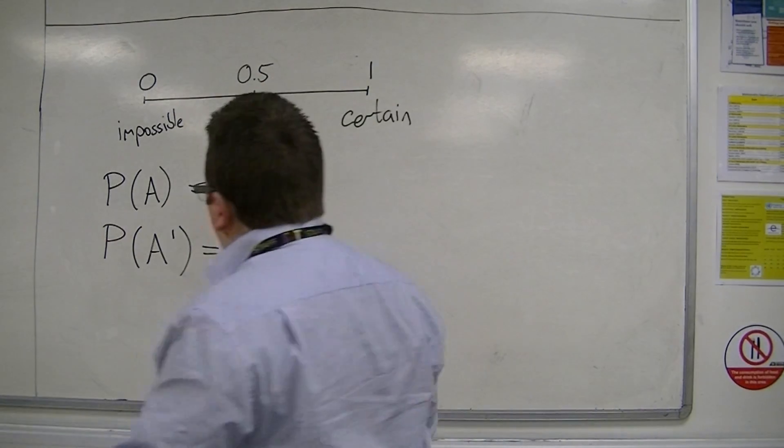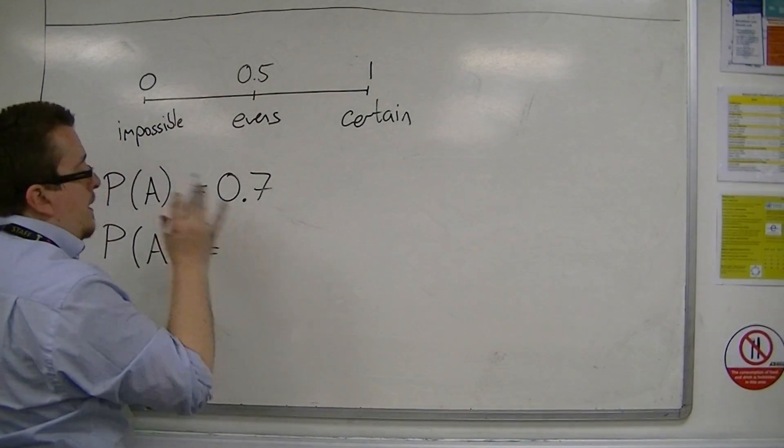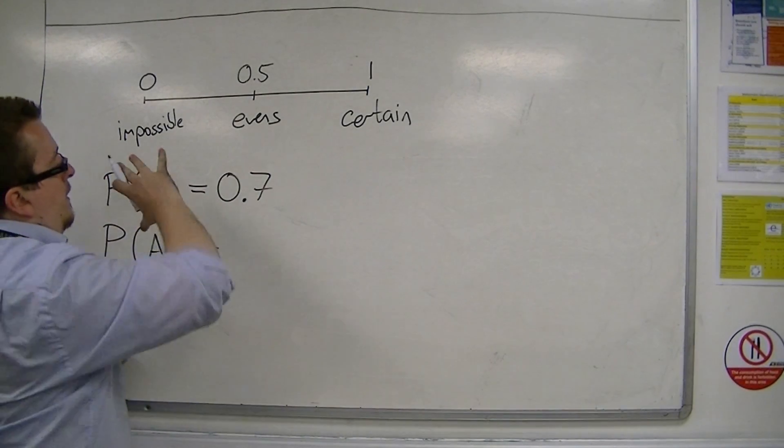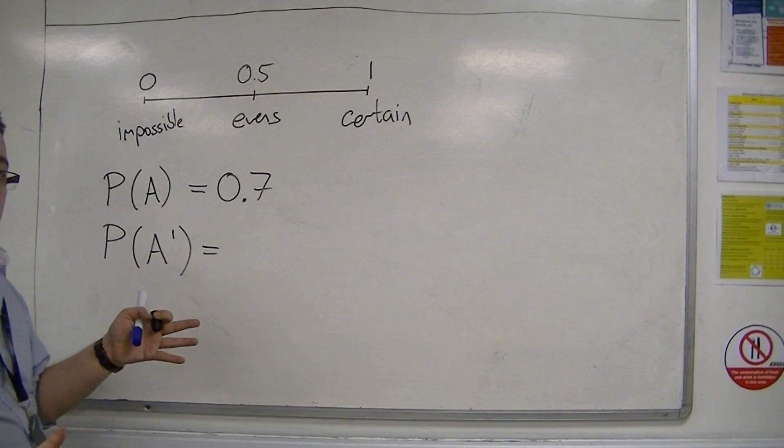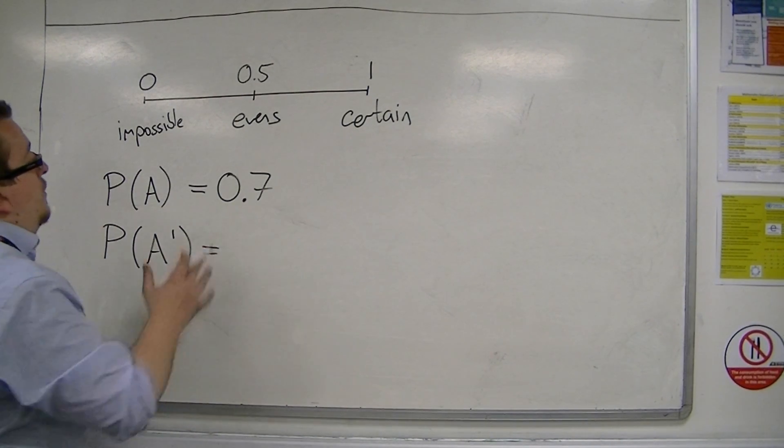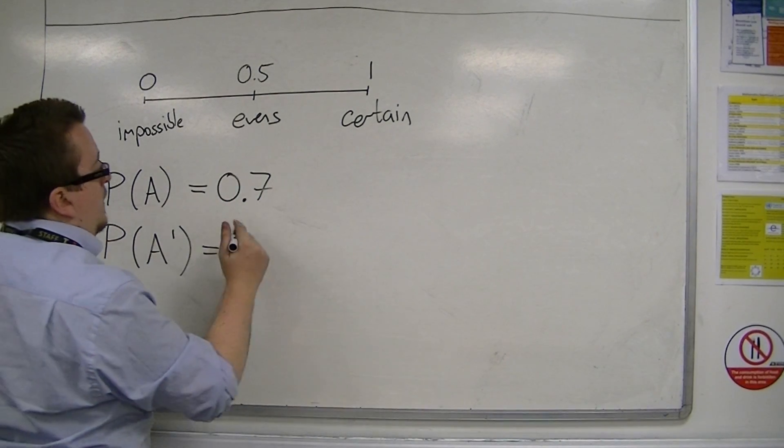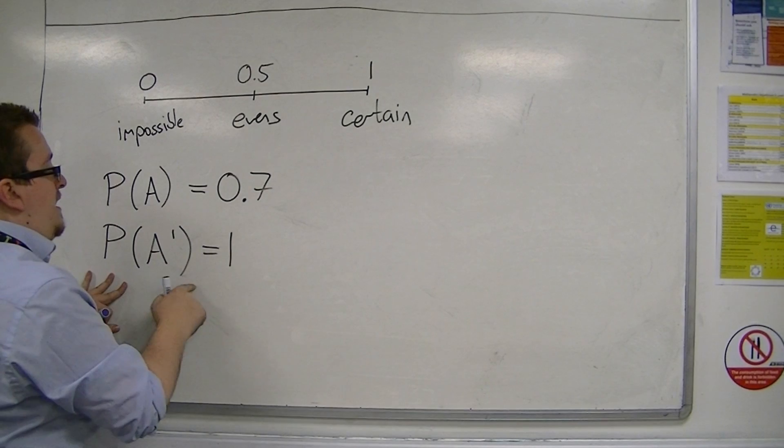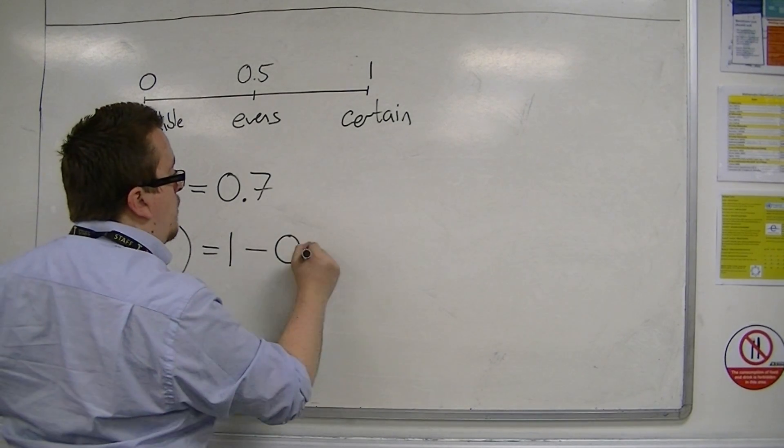So that would be 0.3. And that's because A is either going to happen or it's not going to happen. There's no in-between here, and so the two probabilities must always add up to 1. So you can work out the probability of A not happening by always taking the probability away from 1.